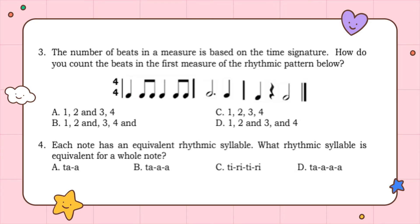Number 3. The number of beats in a measure is based on the time signature. How do you count the first measure of the rhythmic pattern below? Is it letter A: one, two, and three, four? Letter B: one, two, and three, four? Letter C: one, two, three, four? Letter D: one, two, and three, and four?